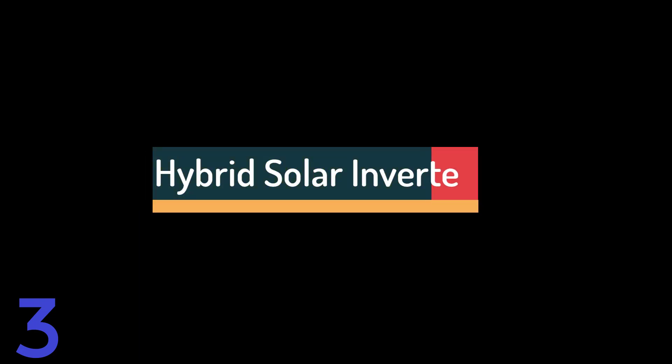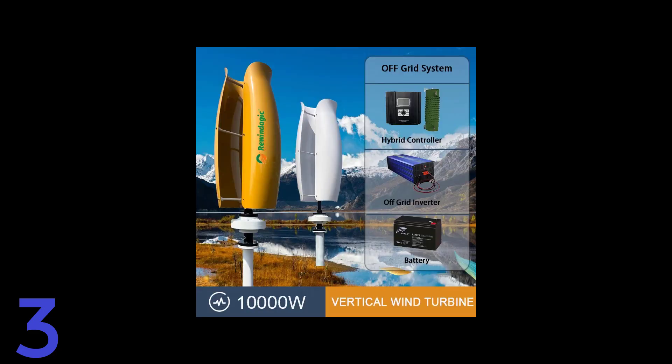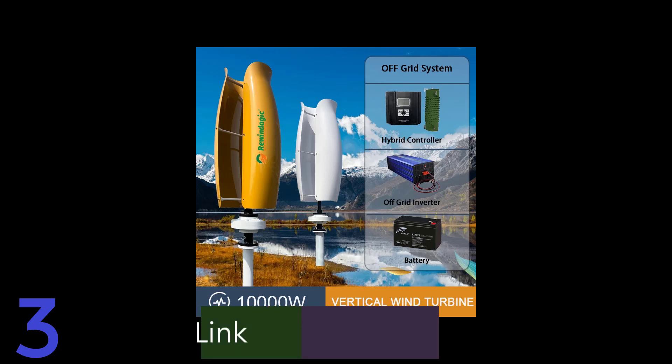Number 3: The 10KW Vertical Axis Wind Turbine Generator is a high-performance, cost-effective renewable energy solution for residential, camping, and off-grid applications. It features two durable glass fiber blades, rated voltages of 12V, 24V, or 48V, and an MPPT charger for efficient energy conversion.